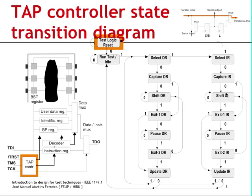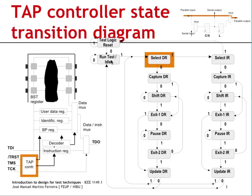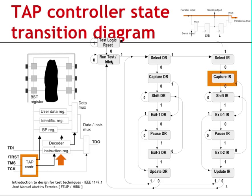We will now consider a sequence of operations consisting of sending in the external test instruction. We go to the shift instruction register state, and then, after having sent the external test instruction, we send one test vector to the boundary scan register, going through to the shift data register state where the selected data register will be the boundary scan register. To begin, we drive a 0 to TMS and upon one test clock cycle move from test logic reset to run test idle. By driving a 1 to TMS we go to select data register, then to select instruction register, and then by driving two 0s we go through capture instruction register into shift instruction register.